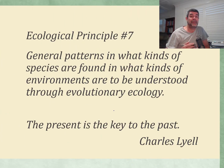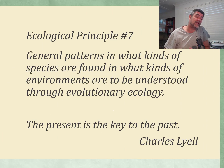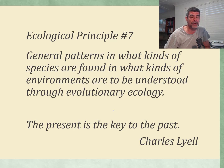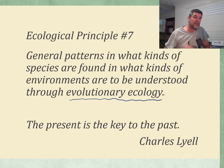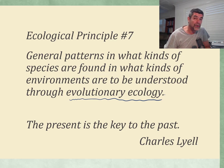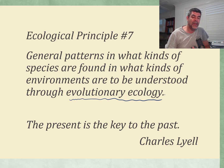The first thing we need to do is introduce ecological principle number seven: general patterns in what kinds of species are found in what kinds of environments are to be understood through evolutionary ecology. The changes that occur in ecosystems — particularly those abiotic factors that impact the plants, the autotrophs or producers — drive the rest of the ecosystem, and are part of understanding how things have changed on the Earth over time.